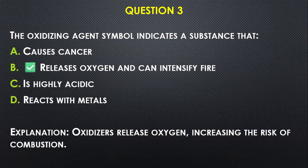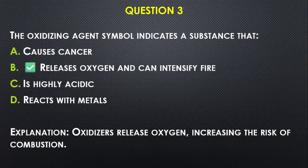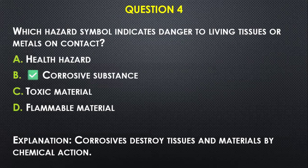Question number three: The oxidizing agent symbol indicates a substance that — A) causes cancer, B) releases oxygen and can intensify fire, C) is highly acidic, D) reacts with metal. I would go with B, because oxidizers tend to release oxygen, thereby increasing the risk of combustion, and if combustion is already in process it can help to intensify the fire.